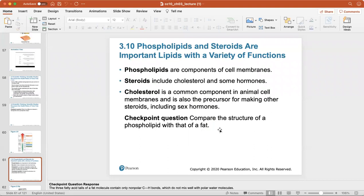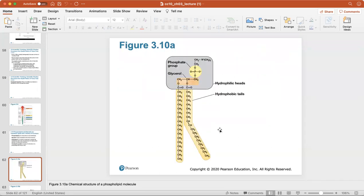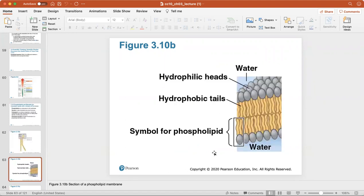Phospholipids and steroids are important lipids with a variety of functions. Phospholipids are important, they make up your cell membranes. Steroids include cholesterol and some hormones. Cholesterol is a common component in animal cell membranes, and it's also the precursor for making other steroids including your sex hormones. Here's the chemical structure of a phospholipid molecule. It has a phosphate group with the lipid molecule below it. This phospholipid is what makes up the phospholipid bilayer in your cell membrane. If there's a double bilayer of those phospholipids, the hydrophilic heads always face the water, whether in the interior or exterior environment of the cell, and the hydrophobic tails face each other.